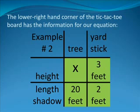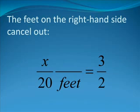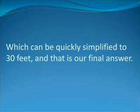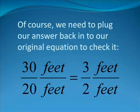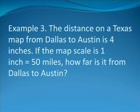The lower right-hand corner of the tic-tac-toe board has the information for our equation. And here is our equation: X divided by 20 feet is equal to 3 feet divided by 2 feet. The feet on the right-hand side cancel out. We multiply both sides by the denominator, that is the bottom portion of the ratio or fraction, on the left-hand side, and then we get X is equal to 3 times 20 feet divided by 2, which can be quickly simplified to 30 feet. And that is our final answer. Of course, we need to plug our answer back into the original equation to check it. 30 feet divided by 20 feet is equal to 3 feet divided by 2 feet. And this simplifies to 1.5 equals 1.5, showing that our answer is correct.